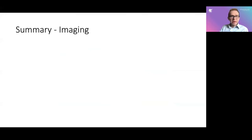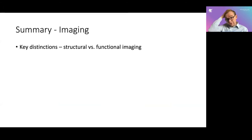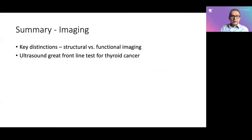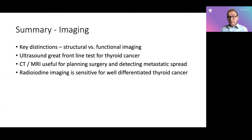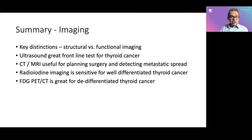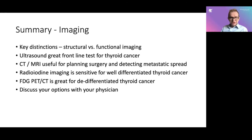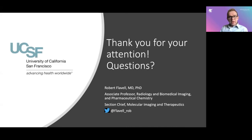To summarize: key distinctions to consider are structural versus functional imaging. Ultrasound is a great frontline test for thyroid cancer — the first line of defense. CT and MRI are useful for planning surgery and detecting metastatic spread. Radioiodine imaging is very sensitive for well-differentiated thyroid cancer. FDG PET-CT is great for de-differentiated thyroid cancer. Of course, discuss your options with your physician — physicians enjoy having patients who are well informed about their own treatment. Thank you all for your attention; we can now go through questions.